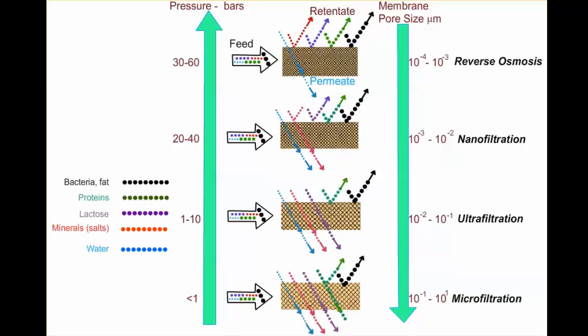For ultrafiltration, the pore size varies from 10^-2 to 10^-1 micrometers. Microfiltration has the largest pore size, ranging from 10^-1 to 10 micrometers.